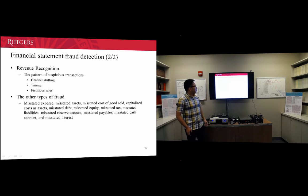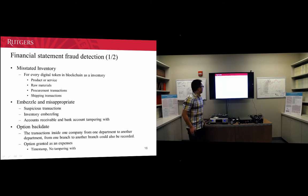For misstated inventory, if we design our blockchain technology infrastructure properly, we could have each digital token represent, for example, the money, the products or service, the raw materials, or the procurement transaction under the surveillance of the blockchain technology.